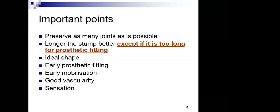Another principle is that the longer the stump — or residual limb — the better, with one exception: if the residual limb is too long to accommodate a prosthesis appropriately. In trans-tibial or below-knee amputation, excessive limb length can make prosthesis fitting difficult, resulting in the prosthetic limb being longer than the intact limb, requiring a shoe raise on the intact side. These are things we need to understand during pre-prosthetic assessment.